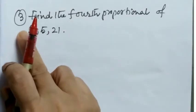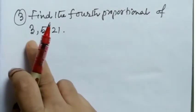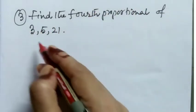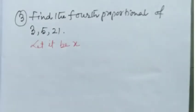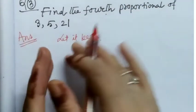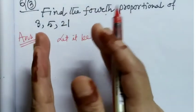Question number 3. Find the 4th proportional of 3, 5 and 21. Let it be x. Now, according to question, what is given? 3, 5, 21, x are in proportion.